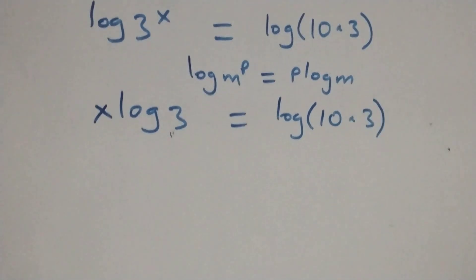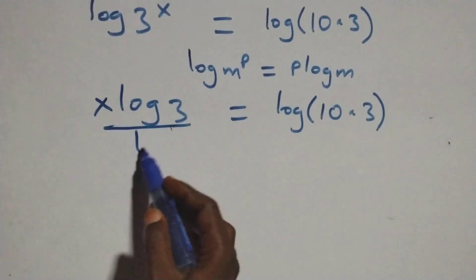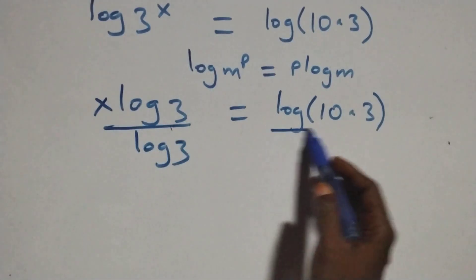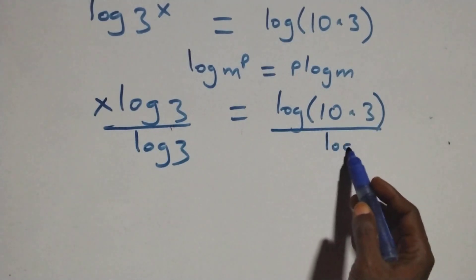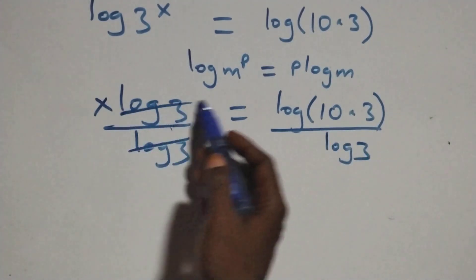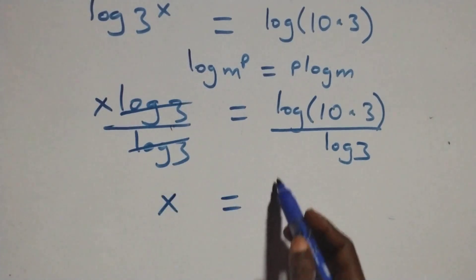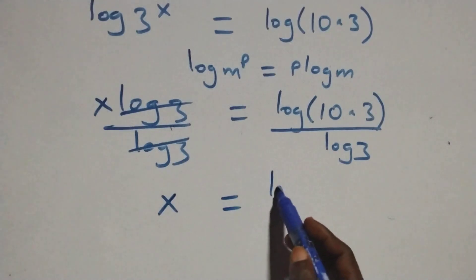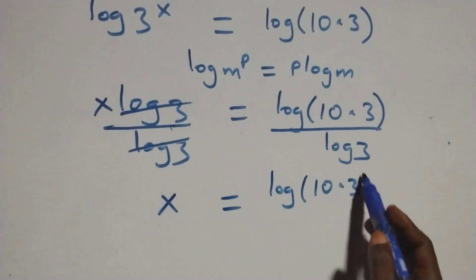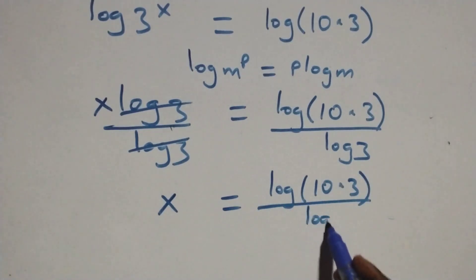As this here, we divide both sides by log 3. Also divide this side by log 3, which implies that log 3 cancels each other and we have x equals to log 10 times 3 over log 3.